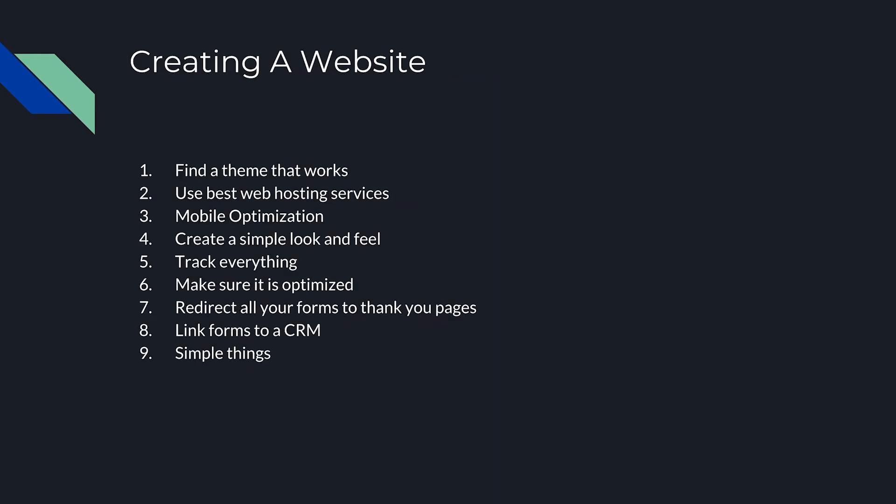Starting off: creating a website. There are nine things that make a good website. One, find a theme that works. Two, use great web hosting. Three, make sure your website is mobile optimized. Four, create a simple look and feel. Five, track everything. Six, make sure it is optimized properly. Seven, redirect all your forms to thank you pages. Eight, link all of your forms to the CRM. And nine is all of the simple things.